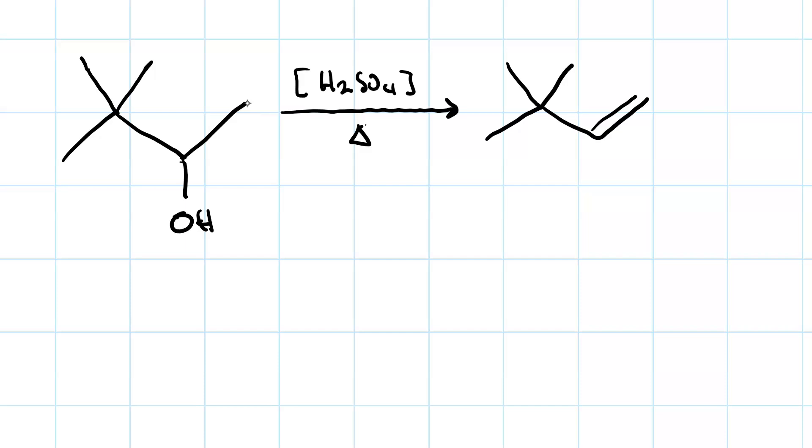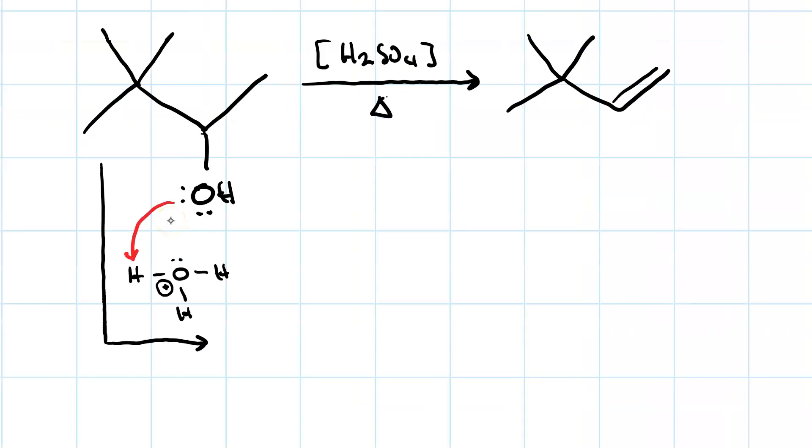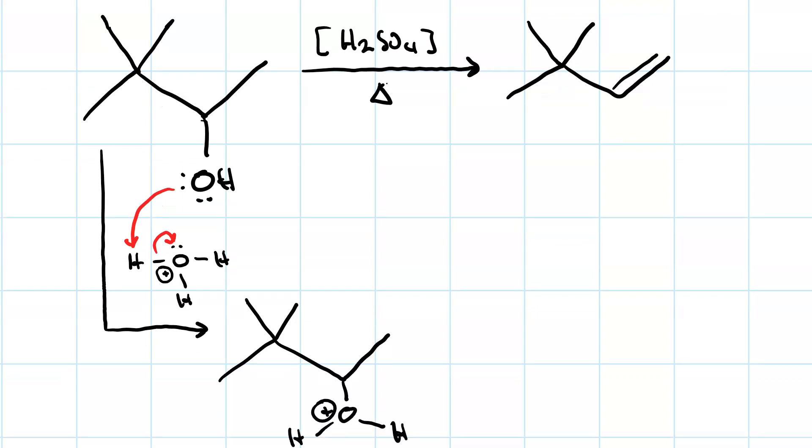But if you look into the mechanism, you'll see this is not actually the case. The first step will be proton transfer. And we get this protonated alcohol. And we can now do loss of a leaving group. That will make a secondary carbocation.